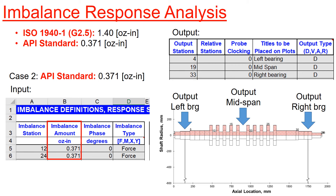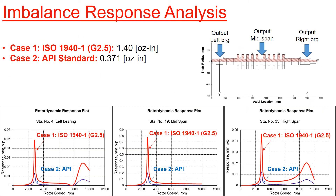Now, what if we input the API standard allowable imbalance limit to the model? You need to update the imbalance amount in the rotor dynamic model and run it. The result shows the rotor response with both imbalance specs — as expected, the rotor motion is smaller with the smaller imbalance. Every company has its own imbalance spec limit based on the history of success of their products. Bigger machines with high speed operation and high pressure conditions tend to work better with API standard, but machines with less severe operating conditions, ISO grade G2.5 works fine.